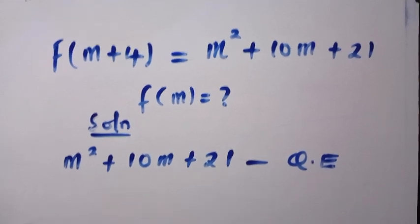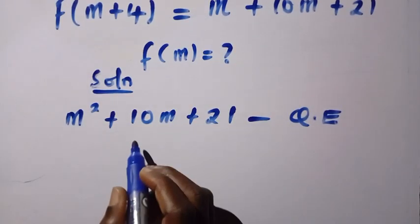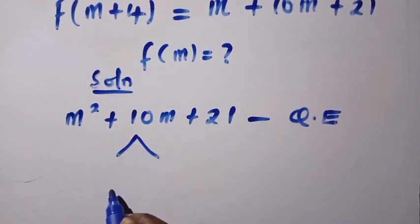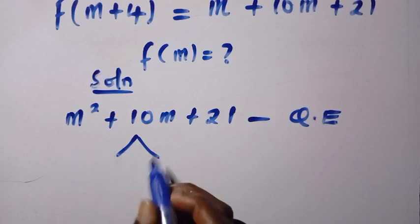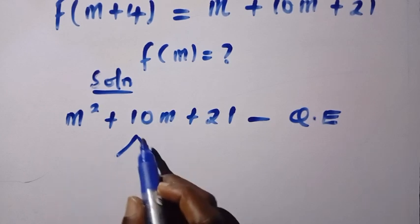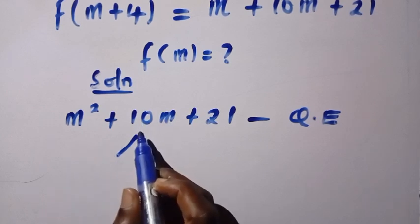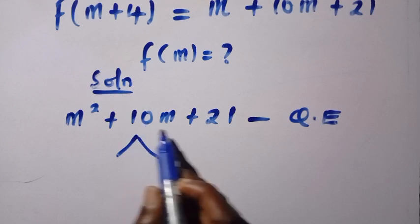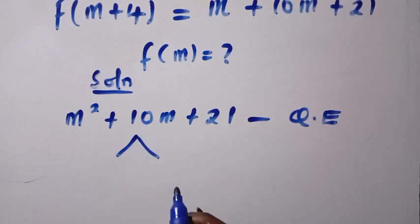If I factorize this completely, the middle term here is known as the sum of this quadratic. We need two numbers that when we add together, it gives us 10. And when we multiply it, it gives us 21.